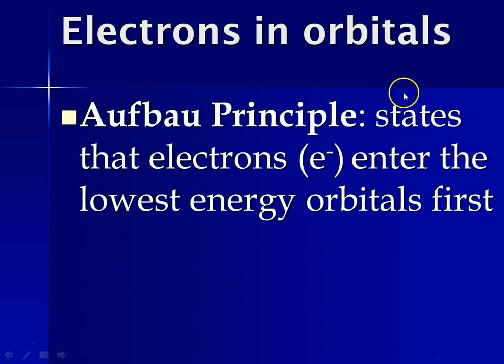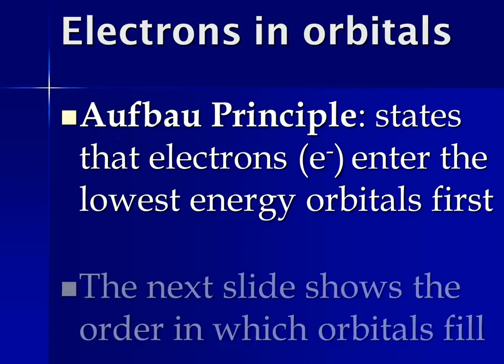So we have a series of rules that we're going to use to figure out where the electrons are. And the first rule that we follow is known as the Aufbau principle. And it states that electrons enter the lowest energy orbitals first. So electrons build up from lowest energy to highest. The word Aufbau is actually a German word, and it means to build up or construct.